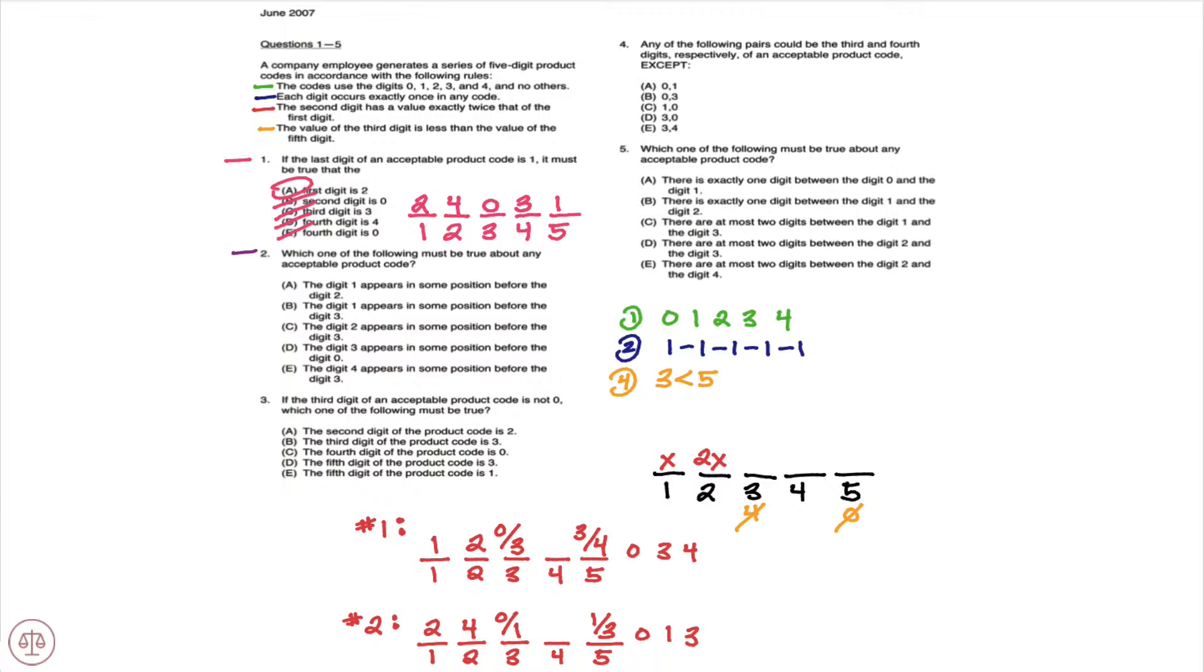Digit one appears in some position before digit two. Well, looking at our previous work from question one, we see digit one after digit two, so A does not follow, doesn't have to be true, so A would be out, again coming from question number one.